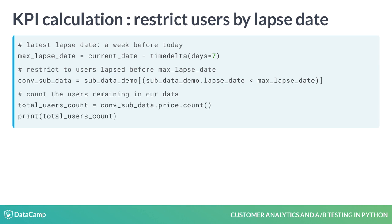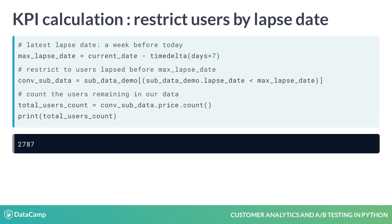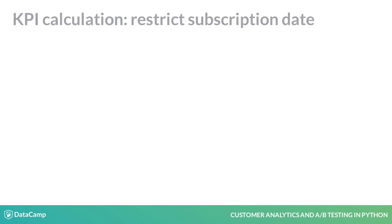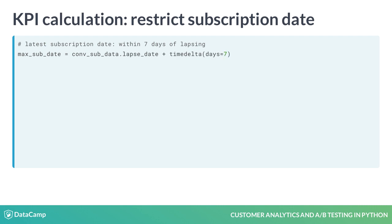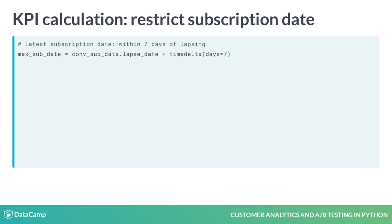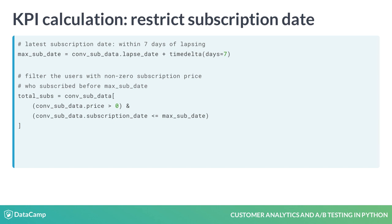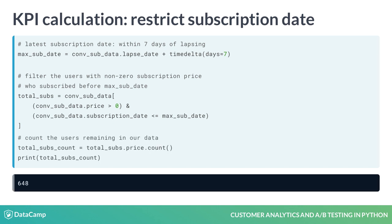Next, we count how big this filtered group is by calling the count method on the filtered dataset. Then, we need to find the number of users who subscribed within seven days of lapsing. We check this by seeing who has a non-zero subscription price and whose purchase is within seven days of lapsing. We can filter in a similar way to before and then count the size of the resulting group.